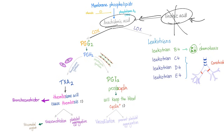Let's go to prostaglandins. Through cyclooxygenase, we get prostaglandin G2. Through lipoxygenase, we get leukotrienes — leukotriene B4, C4, D4, and E4. Whoever invented these names was in kindergarten or something — scientists, you can do better.